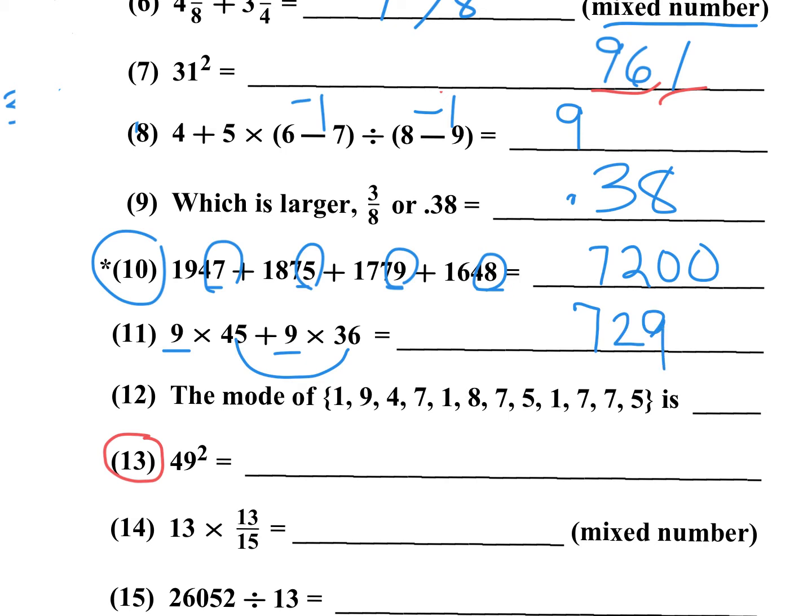Number 12, what is the mode? The mode is the one that appears the most. So I see a 1, 7, 1, 7, 1, 7, 7. So I see the 7 more often. So that's going to be a 7.